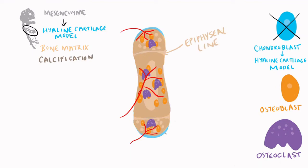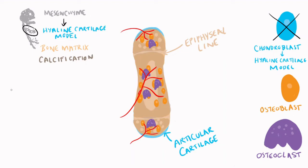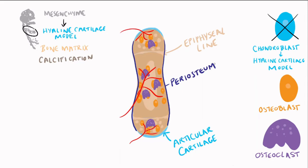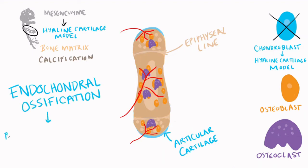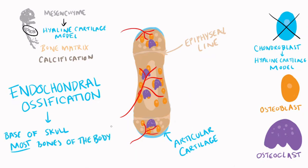The hyaline cartilage remains on the ends of the bones as articular cartilage. The periosteum fully surrounds the bone, firmly attached everywhere except where that articular cartilage is found. This was a simplified version of endochondral ossification, which forms the base of the skull and most other bones of the body. Here again is an illustration demonstrating the basics of endochondral ossification.